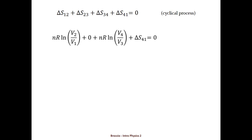So the sum of all entropy changes has to be zero. That means that we can solve for the fourth entropy change, delta S41, although we don't know anything about the specifics of the process. It doesn't matter because the entropy is a function of state, independent of the specific path.